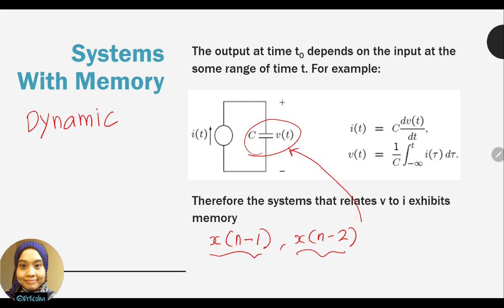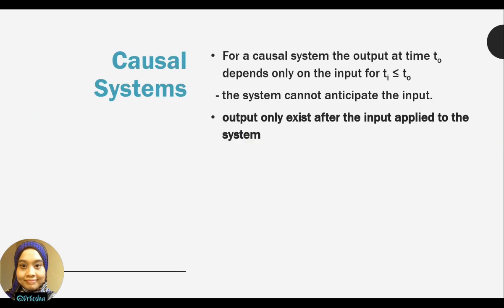Next is the causal system, also known as a non-anticipatory system — different textbooks use both terms for the same meaning. For a causal system, the output only exists after the input is applied, meaning the system uses only the current or present input as well as previous inputs to obtain the output.